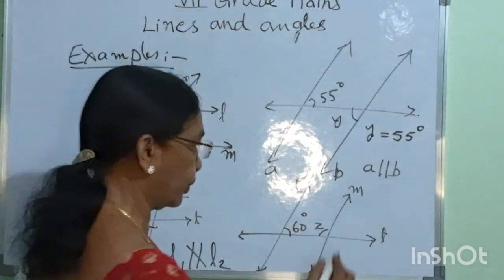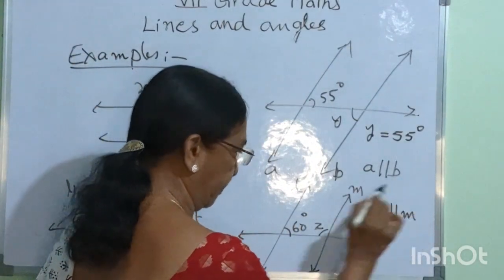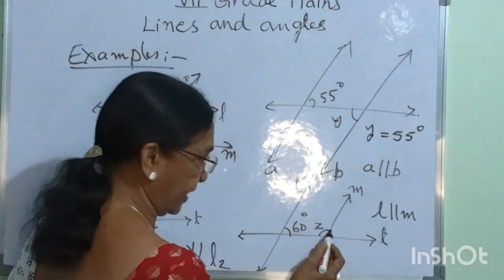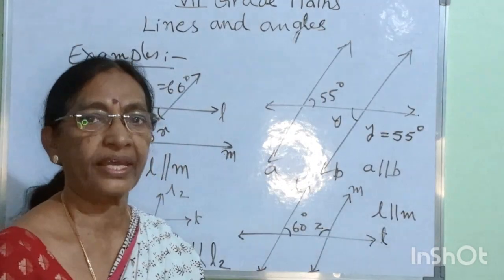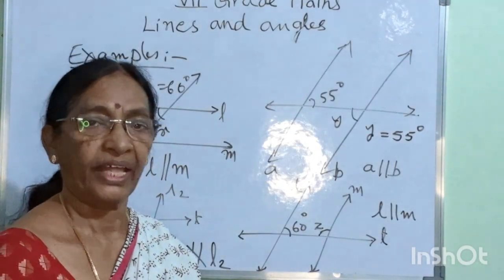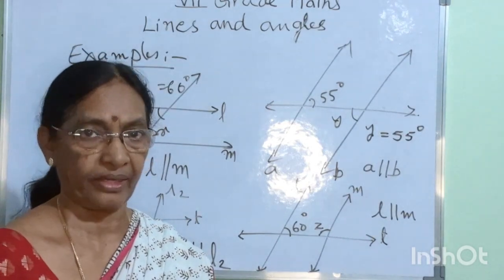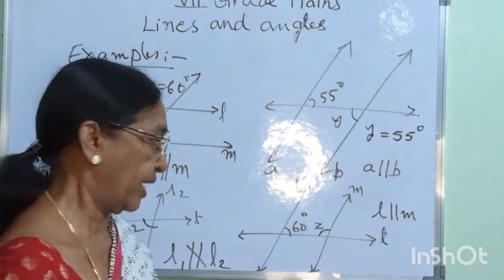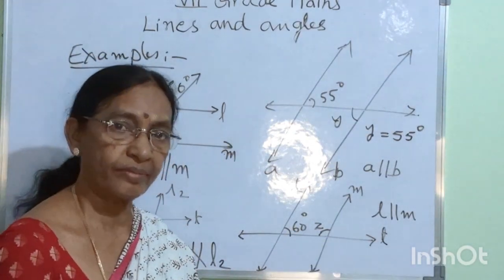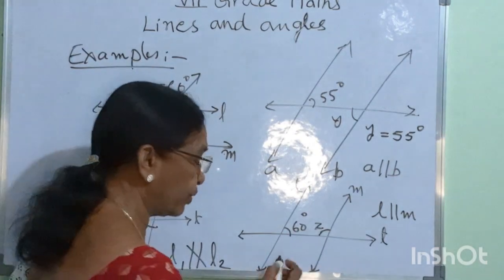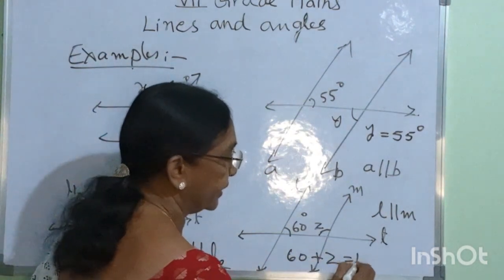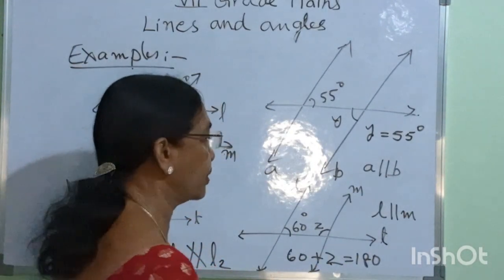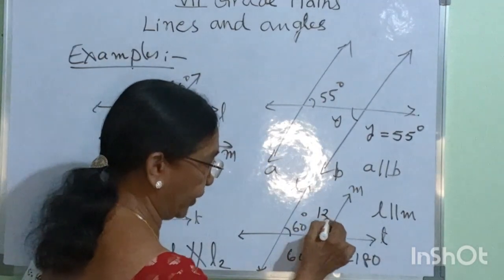Here, L and M are two parallel lines. L is parallel to M, and T is a transversal. Here, 60 degrees and Z are interior angles lying on the same side. So the interior angles lying on the same side are supplementary angles. That means the sum of those two angles is equal to 180 degrees. Therefore, Z is equal to 180 minus 60, which is equal to 120. Therefore, Z is equal to 120 degrees.